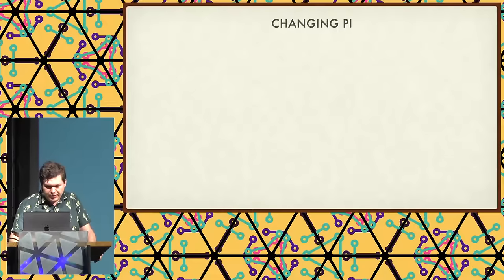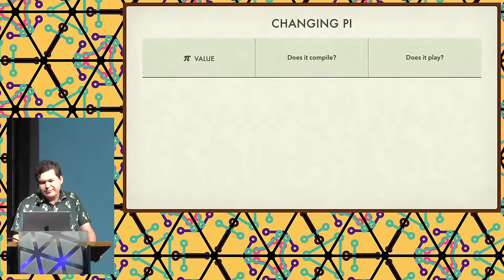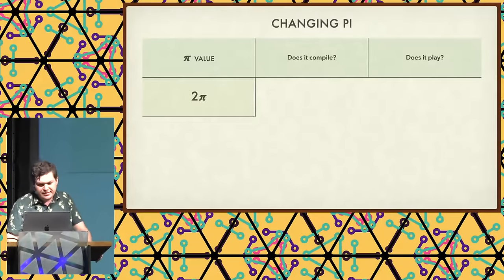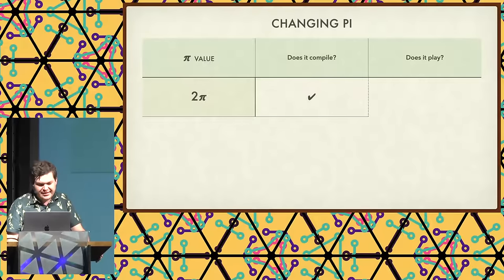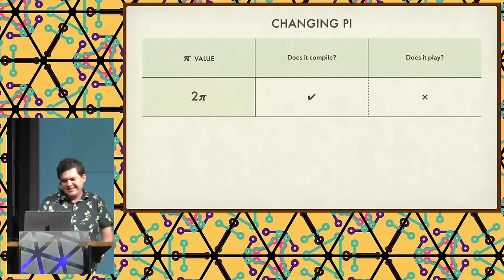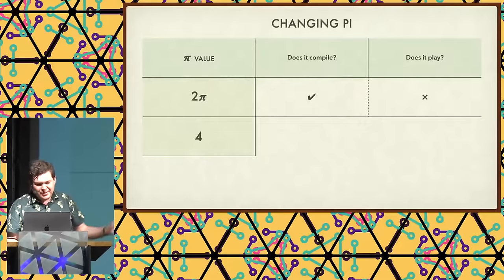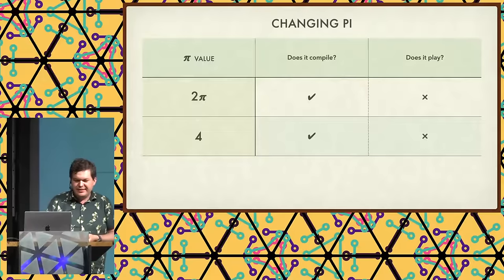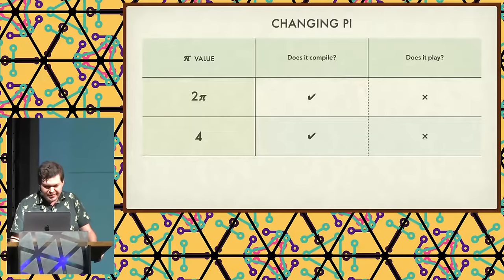Now we're going to get to the fun part — we're going to change pi and figure out whether it compiles and whether it plays. First, we're going to make pi equal to 2pi. Does it compile? Yes. Does it play? No — not fun. Now we're going to make pi equal to 4. Does it compile? Yes, it does. Does it play? Also not fun — the hyperbolic values are not very good.